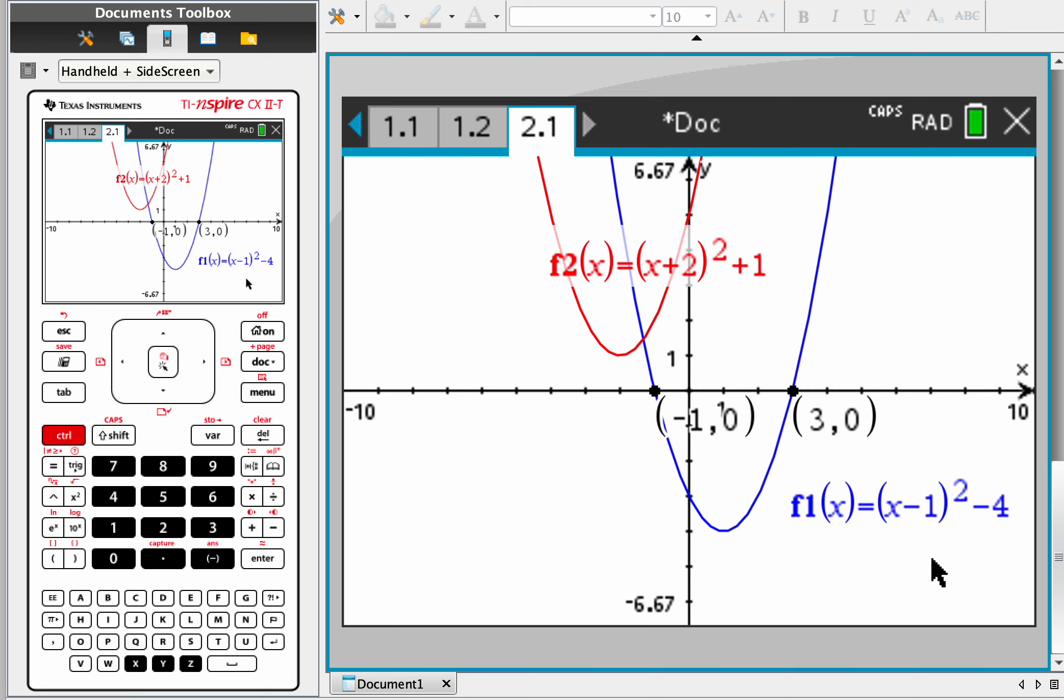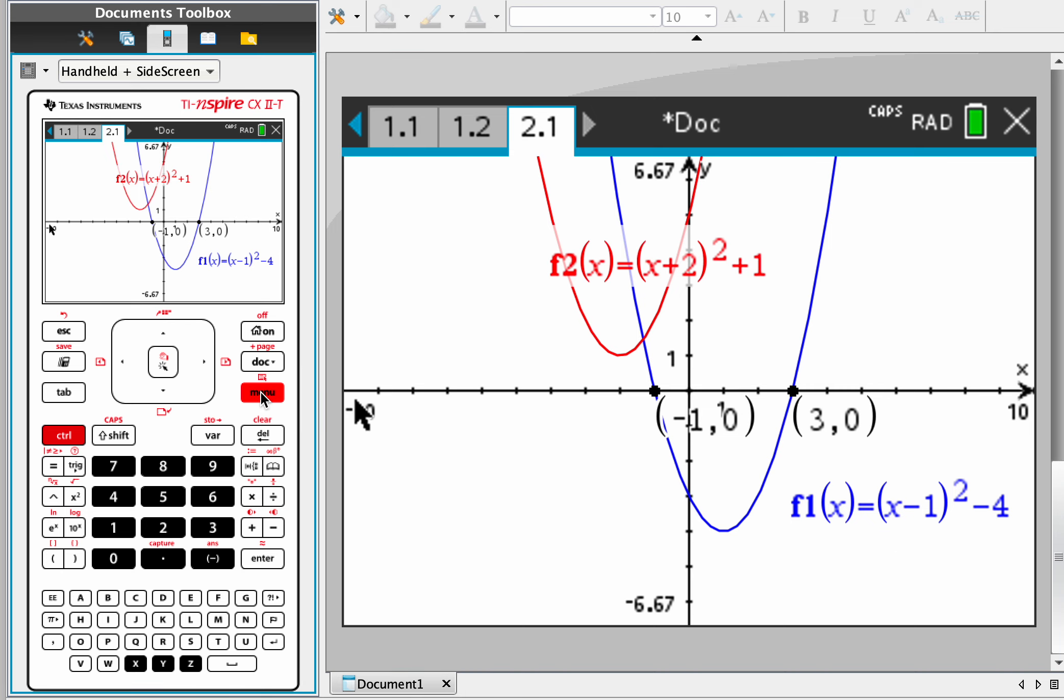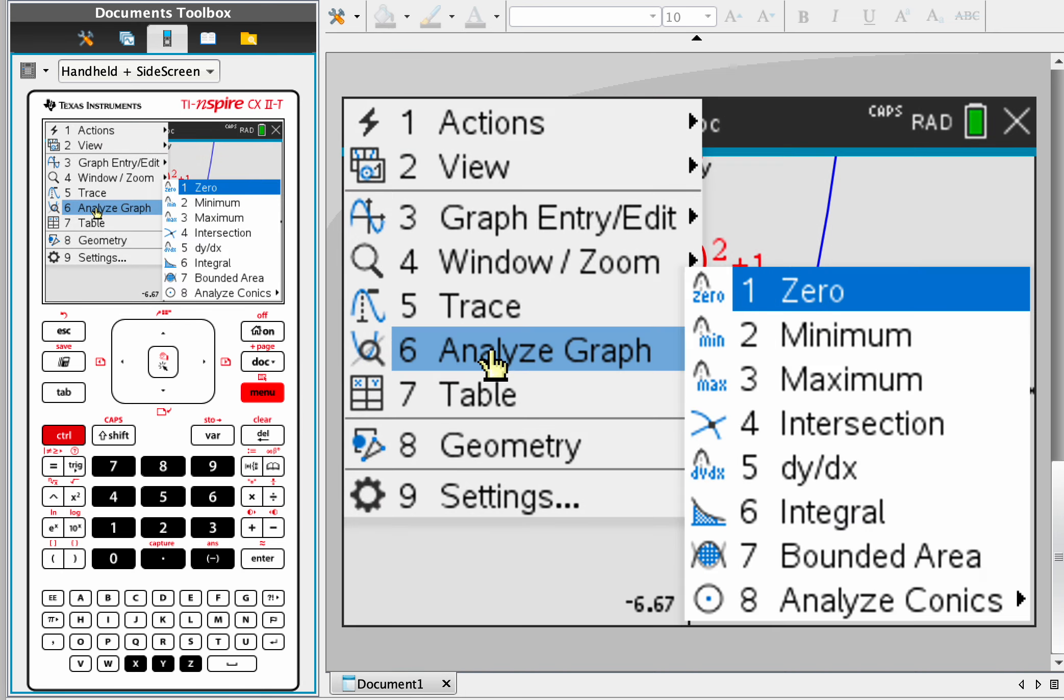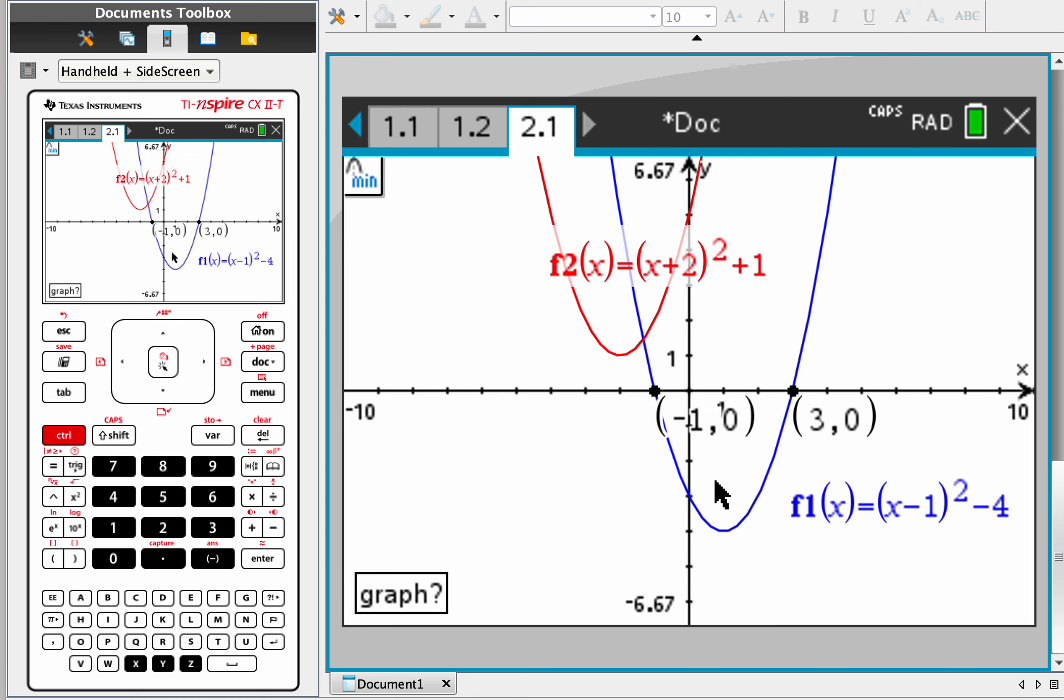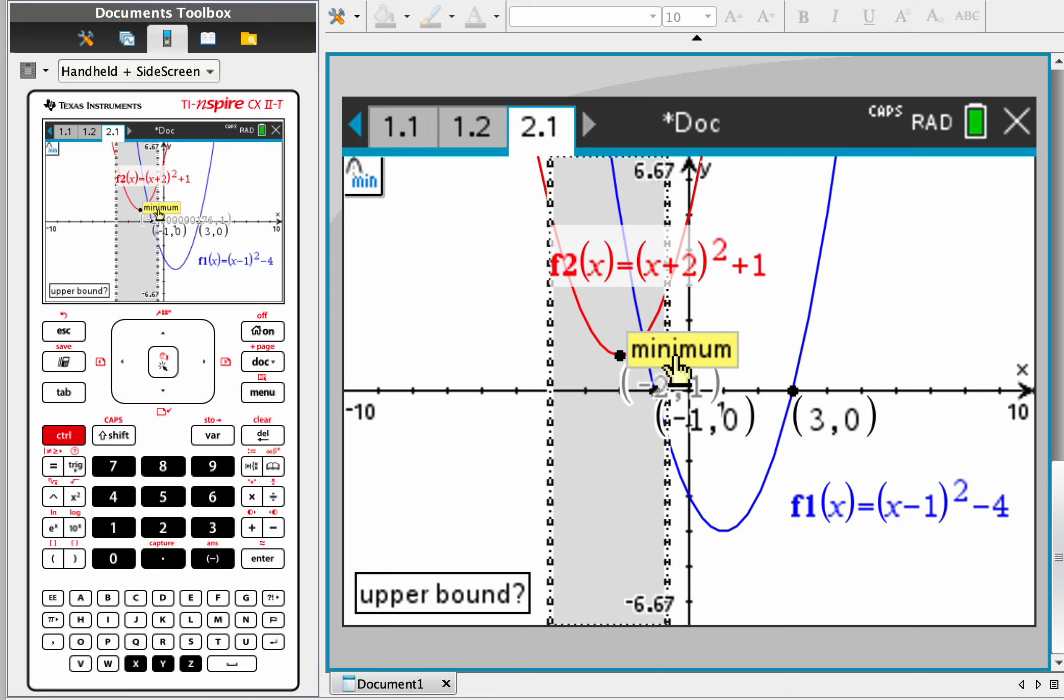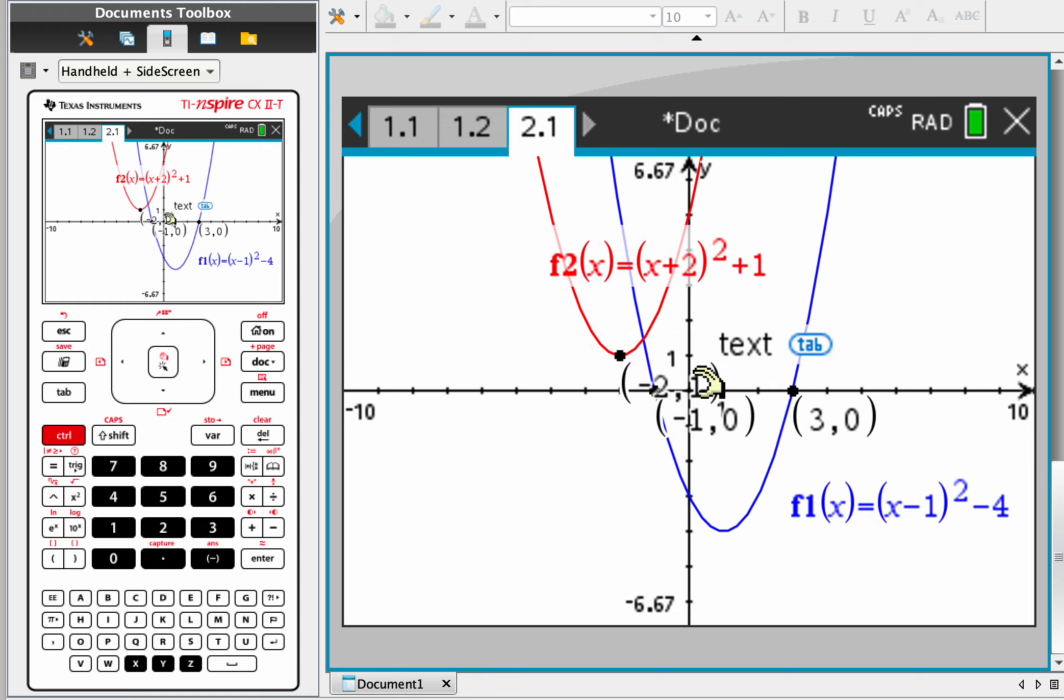So determine the minimum value of both functions. We'll go to menu, analyze graph, minimum, which one? We'll just pick one of them. Lower bound to right there. Now you can see the calculator is glitching a little, so you have to use your brain a little. If it says negative 1.99999999, it means negative two. So I would just move it until it works nicely. There we go, so it's negative two and one.